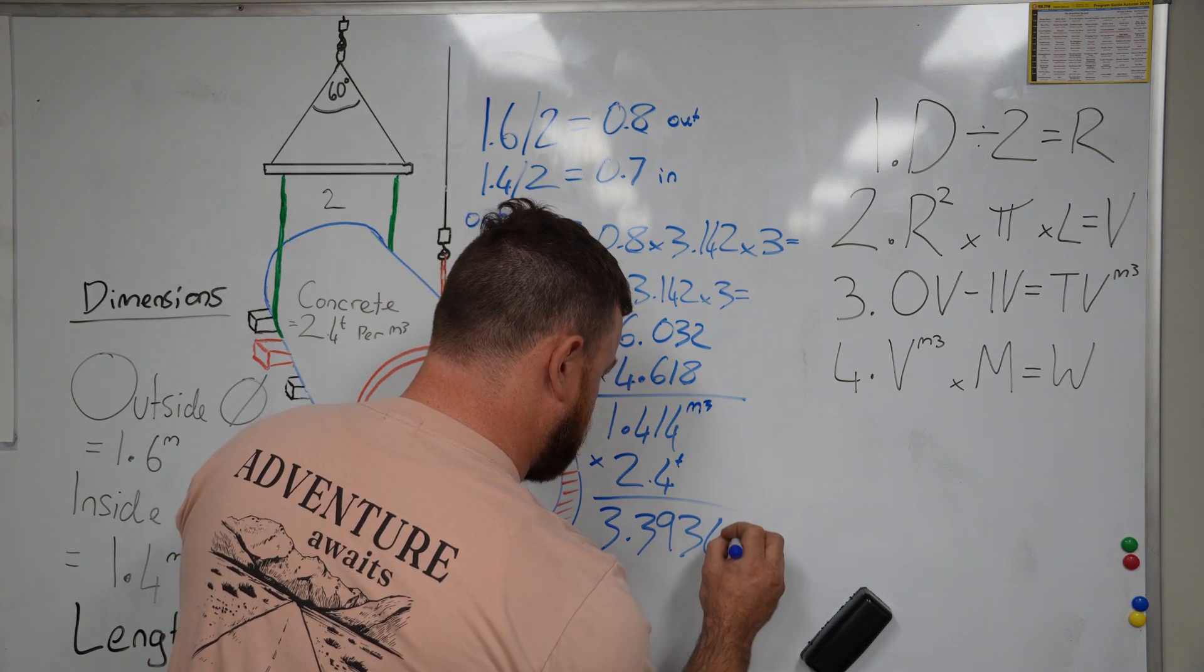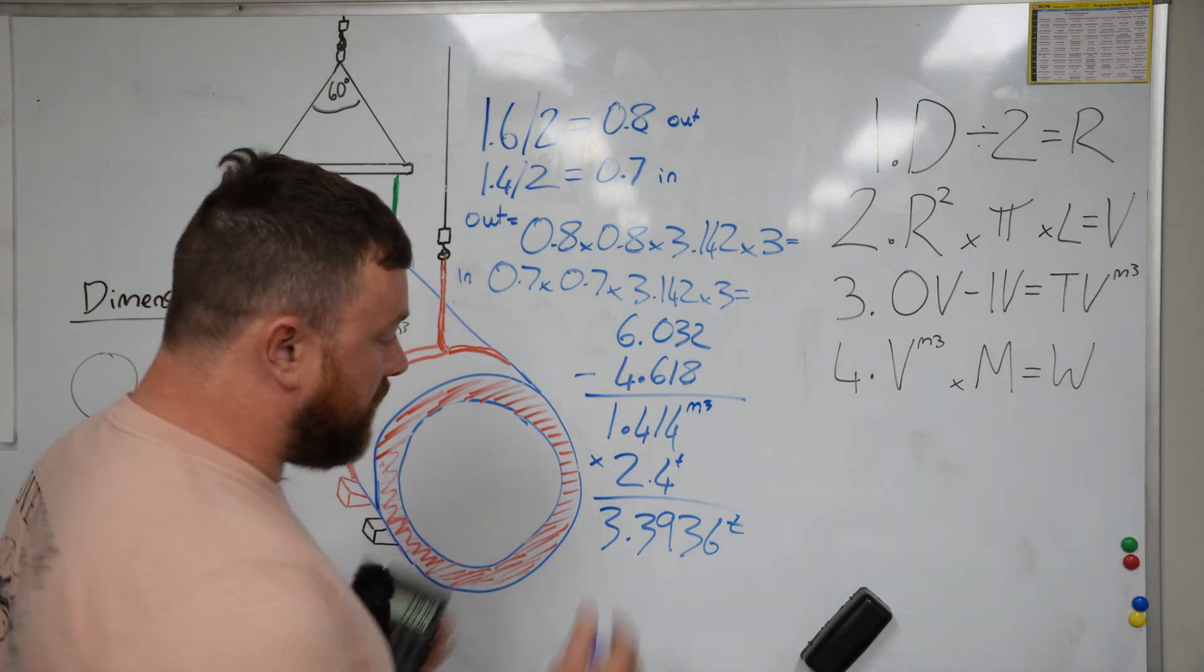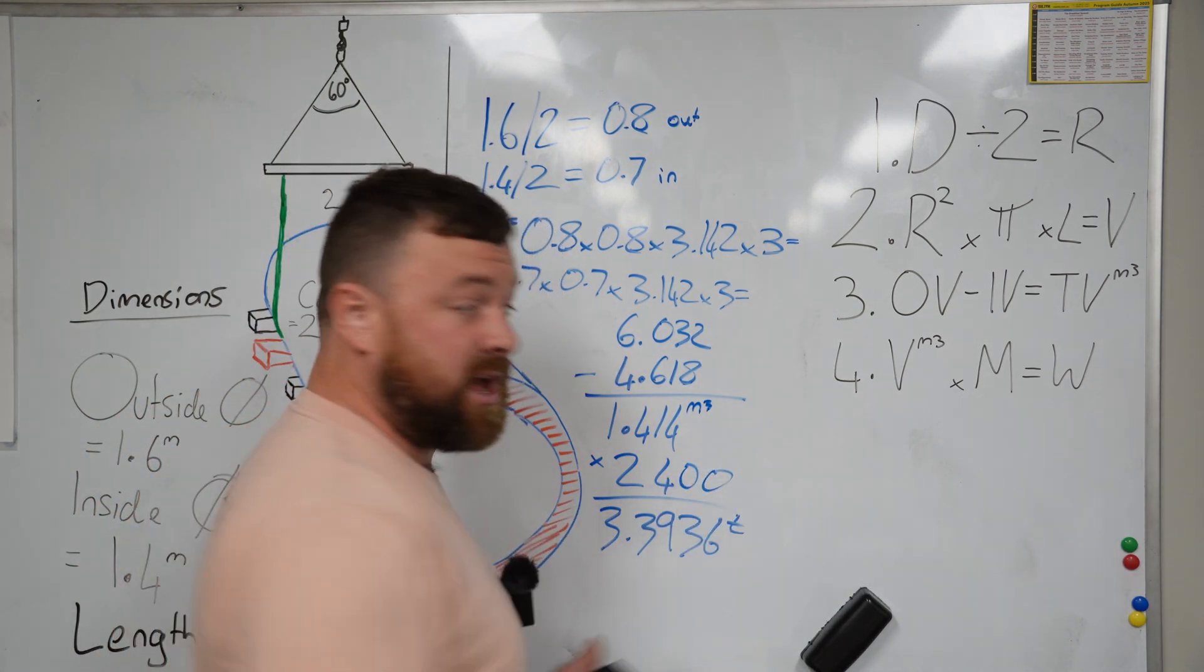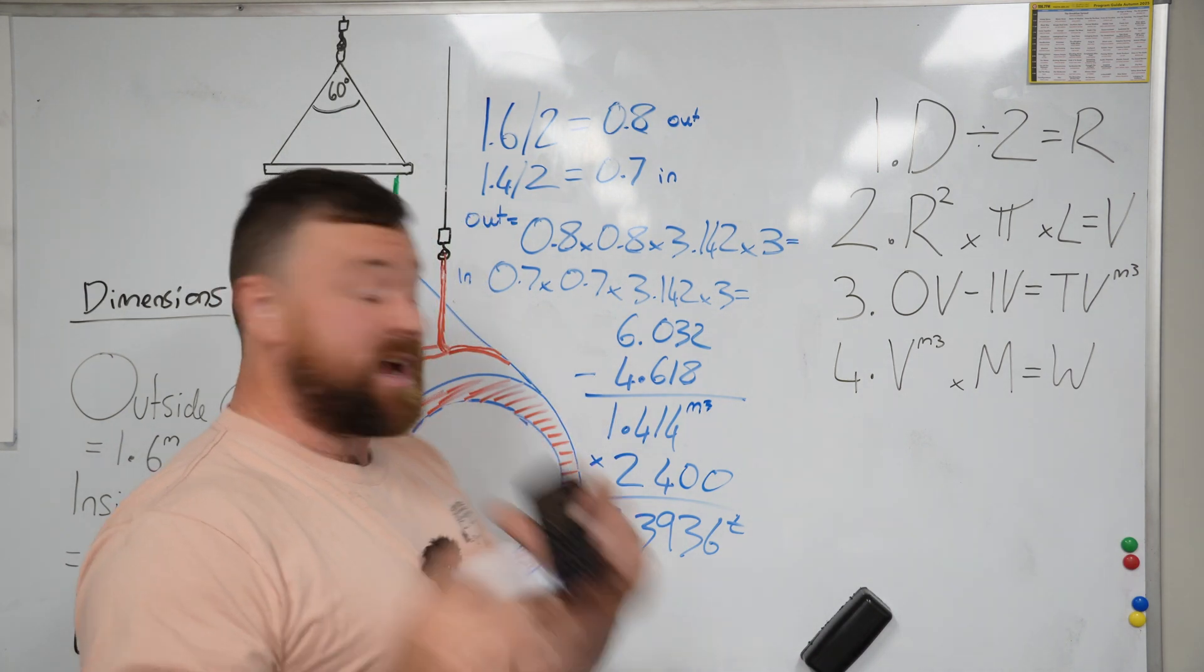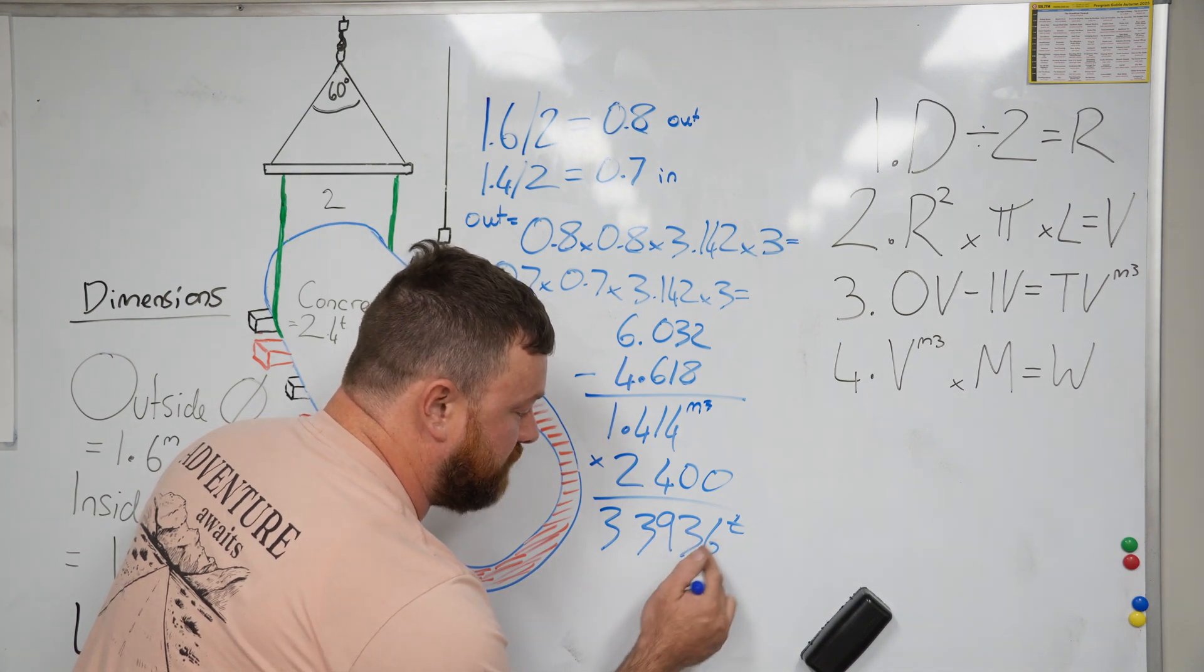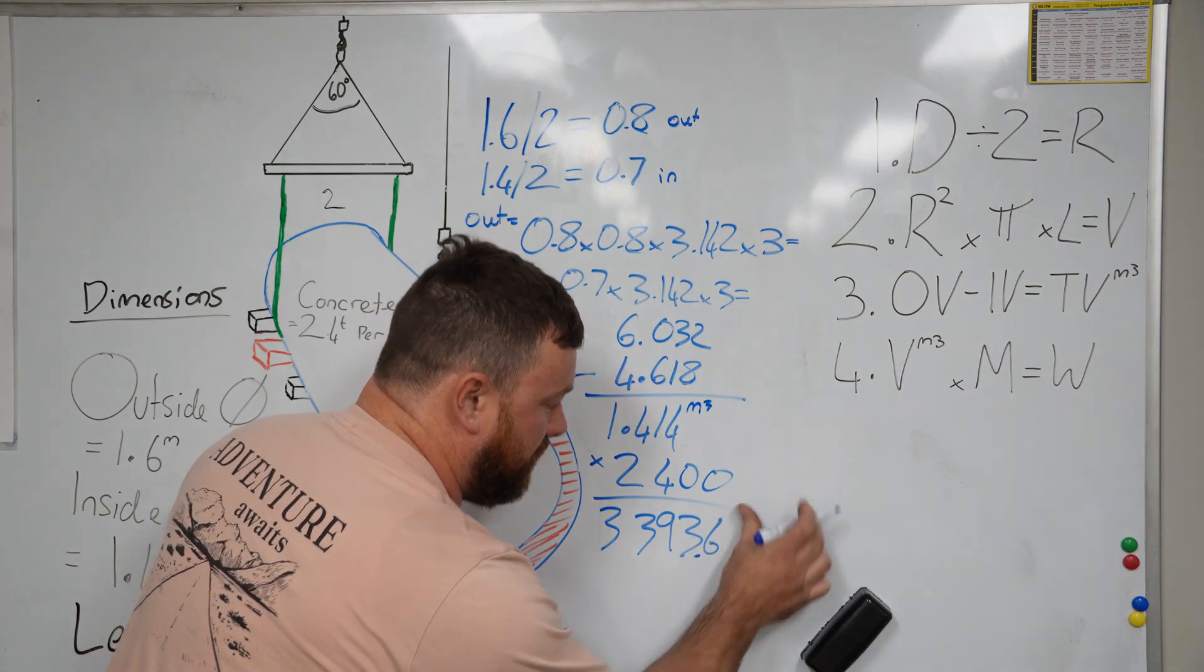3.3936 tons. If you multiplied that by 2,400, you'd be multiplying it by kilos. That would not be incorrect; it would be exactly the same, except you would have 3,393.6 kilograms.